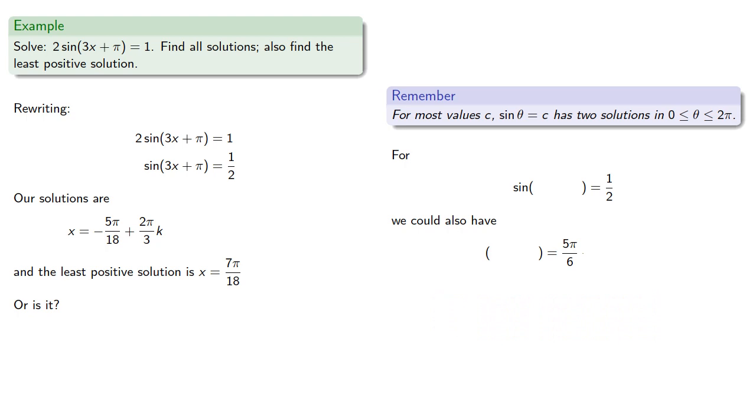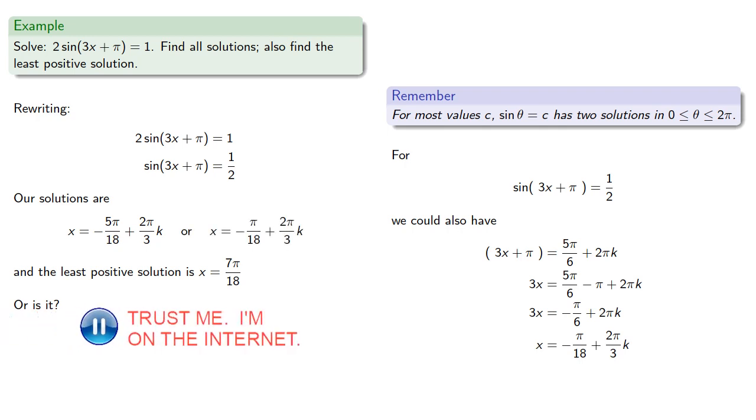And again, plus any multiple of 2pi. And putting things back where we found them, we can solve for x and find, which gives us a second set of solutions.